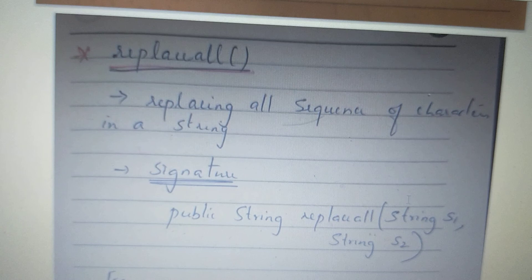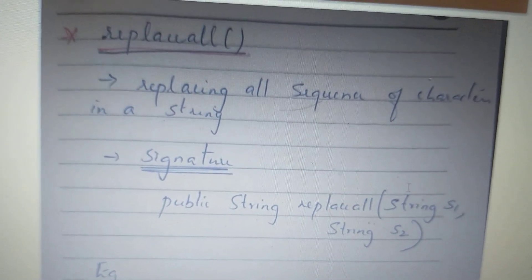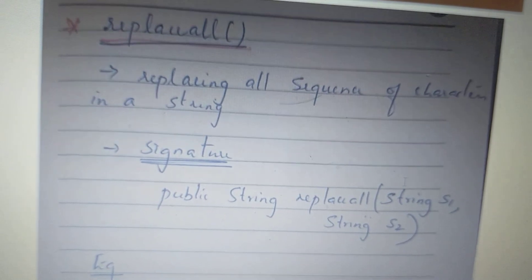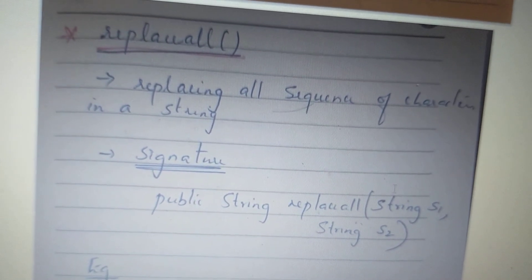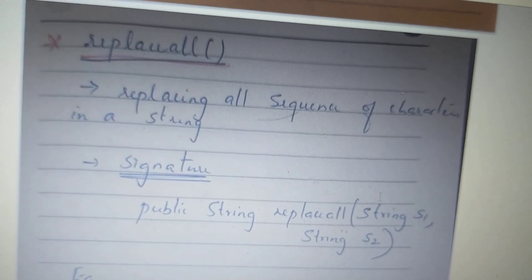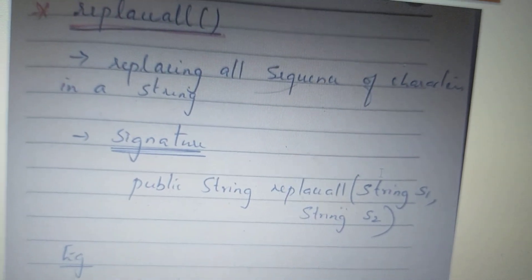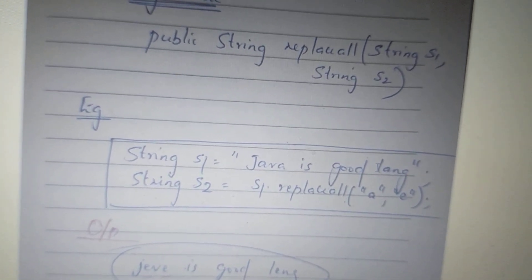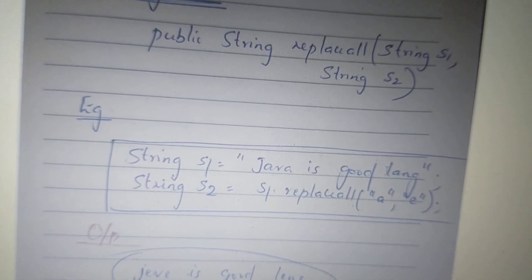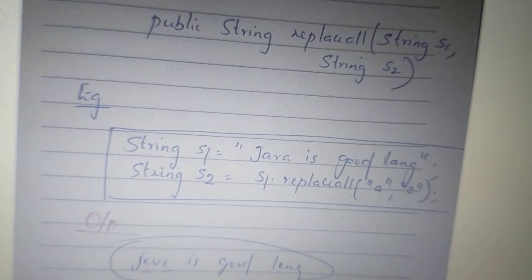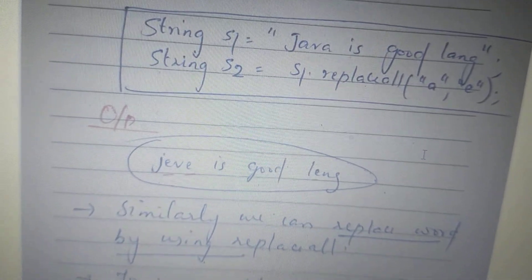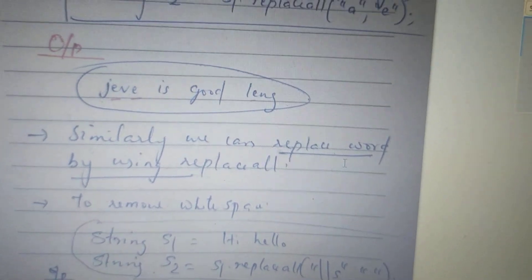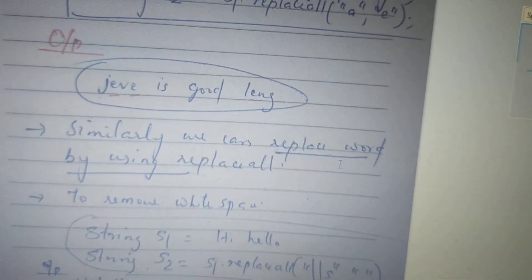The other choice is to use replaceAll. We replace events like E. If you want to replace all, you can do it. So if you want to replace all the string in S1 — 'Java is good language' — I want to replace all: S1.replaceAll(A, E). J,E,V,A becomes J,E,V,E, and L,A,N,G becomes L,E,N,G. That's why we use replaceAll.